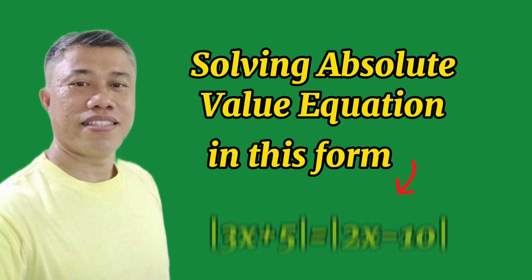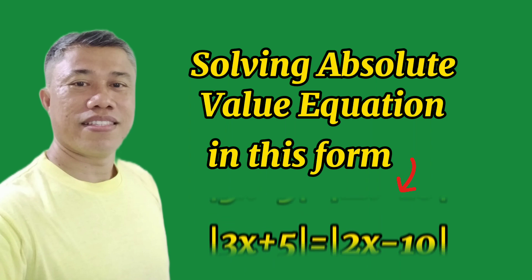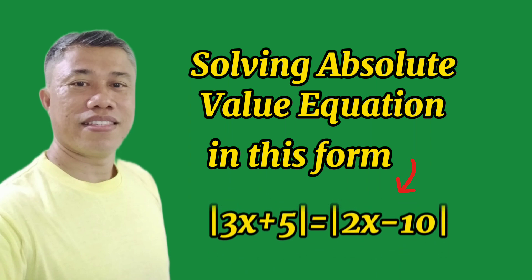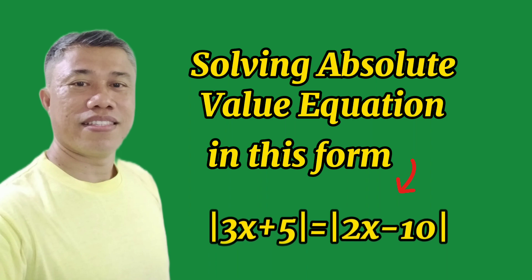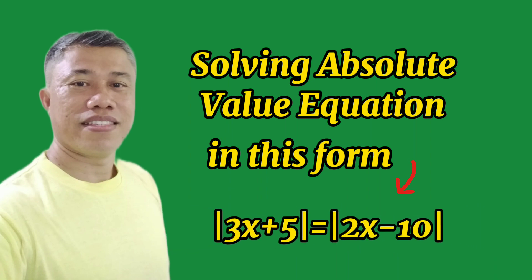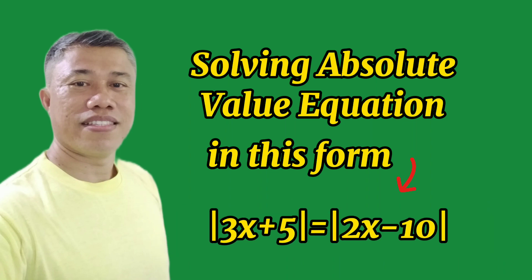Hi there, how are you? Welcome to Sir Matigo. Please stay with me as I go to the second part of my lesson involving solving absolute value equations. This is the form that I am going to discuss with you: the absolute value of 3x + 5 is equal to the absolute value of 2x - 10.